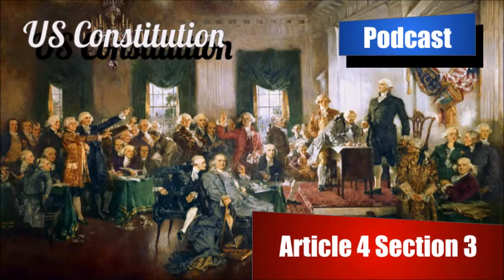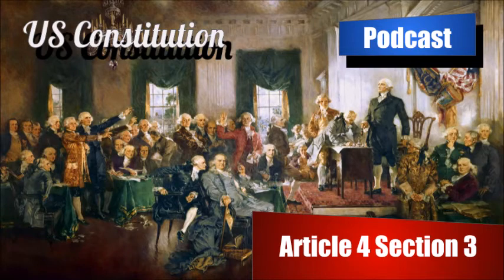Missouri's Enabling Act was passed on March 6, 1820. Missouri actually became a state August 10, 1821, once the state wrote a constitution and came up with a name. The borders of Missouri are laid out in Section 2 of the Enabling Act.